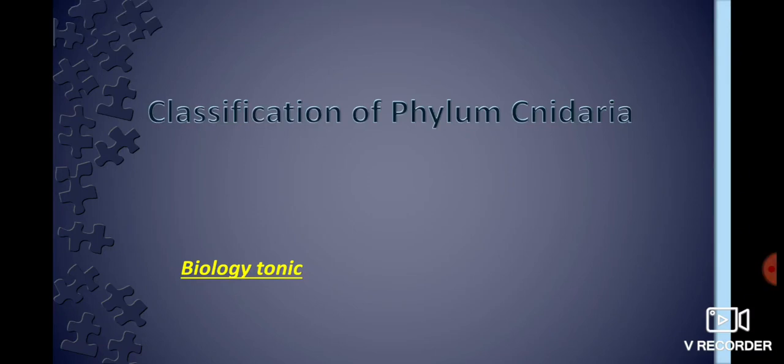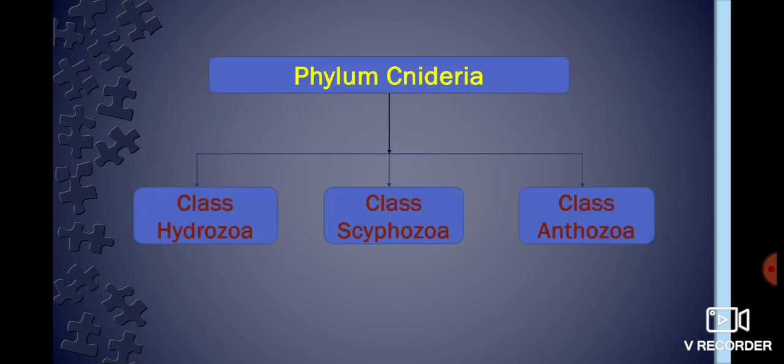Let's discuss the classification of Phylum Cnidaria. In our previous video we discussed the characteristic features of Phylum Cnidaria; now we will discuss classification. On the basis of dominance of medusoid or polyphase in the life cycle, Phylum Cnidaria has been divided into three classes: Class Hydrozoa, Class Scyphozoa, and Class Anthozoa.